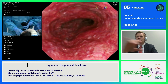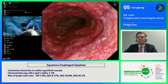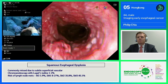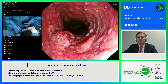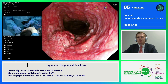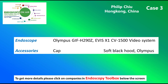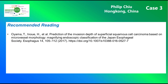Exactly — so this is again the tumor and our plan is chemo-RT. Histology showed squamous cell carcinoma and it was decided that the patient undergoes neoadjuvant chemo-radiation. Here you see the instruments and devices used, and this is Philip Chu's recommended reading.